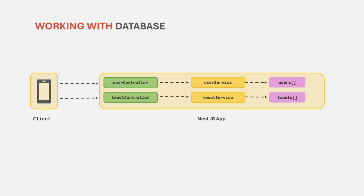So far what we have been doing is, from the client, we send a request to our NestJS application. In our case, the client is Postman, but a client can also be a browser, an iOS app, or an Android app. A request will always be handled by a controller. For example, if we are making a GET request to get the details of a user, this request will be handled by the UserController, which will do some processing and send back the response to the client.